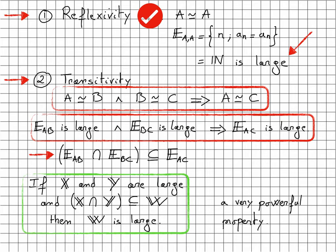If X and Y are large, and if the intersection of X, Y is a subset of W, then W is large. This may not seem very intuitive at the moment, but it will appear to be very powerful later.